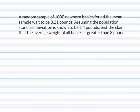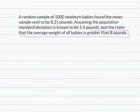Let's try a problem. A random sample of 1,000 newborn babies found that the mean sample weight was 8.21 pounds. Assuming the population standard deviation is known to be 1.4 pounds, test the claim that the average weight of all babies is greater than 8 pounds. Step one: reading the problem, since we are testing a claim about the average weight, our parameter is the mean — specifically, the claim is that the mean is greater than 8 pounds. Since we know the population standard deviation, this will be a z-score, not a t-score.